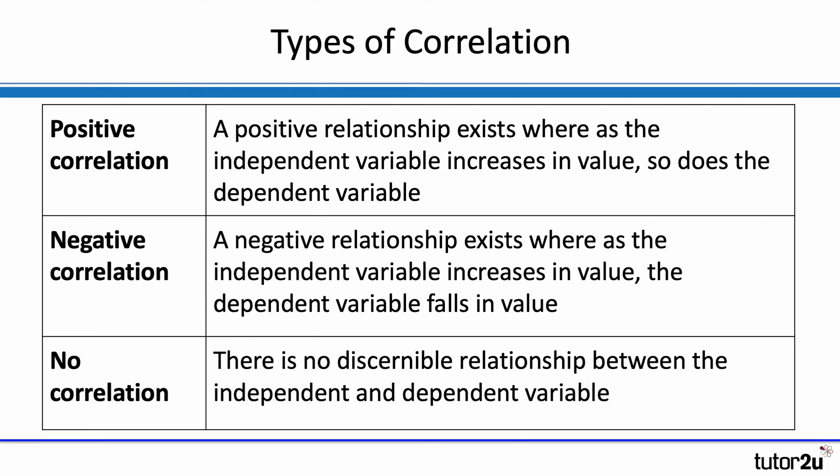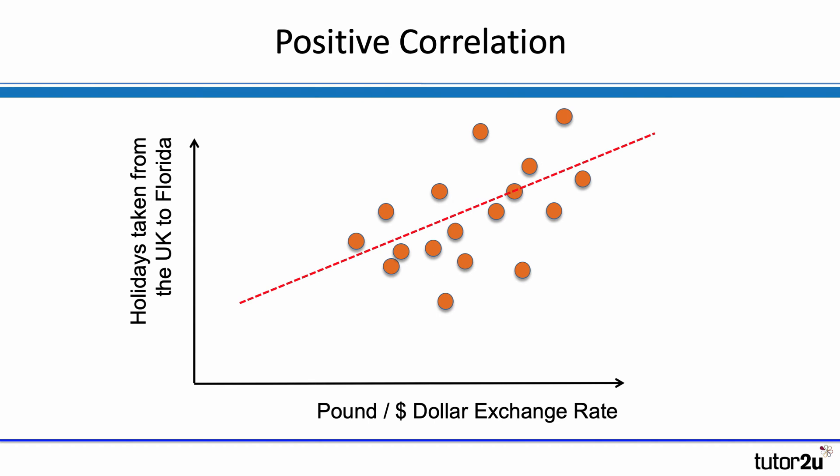Negative correlation means that there is a relationship, but as the independent variable increases, the dependent variable falls in value. And lastly, no correlation — plotting a series of data points, we can't discern a particular relationship and can't predict what's going to happen between the independent and dependent variable. So just to remind ourselves, the three key types of correlation: positive correlation, where as the independent variable increases, so too does the dependent variable.